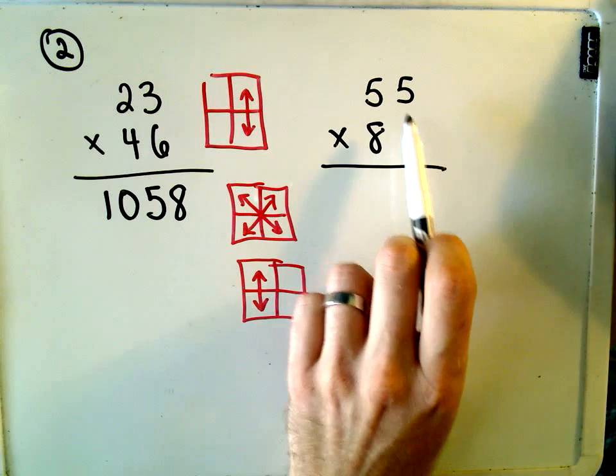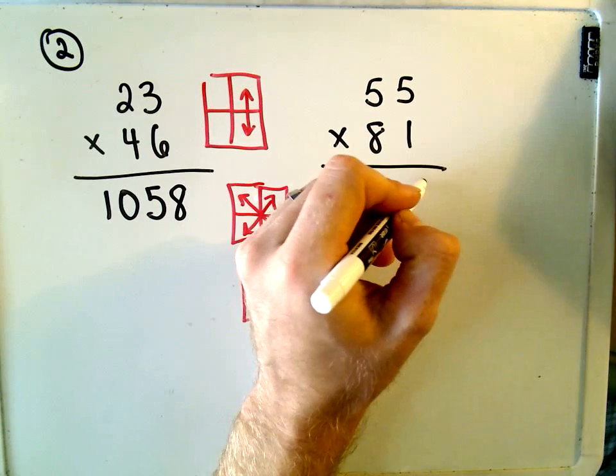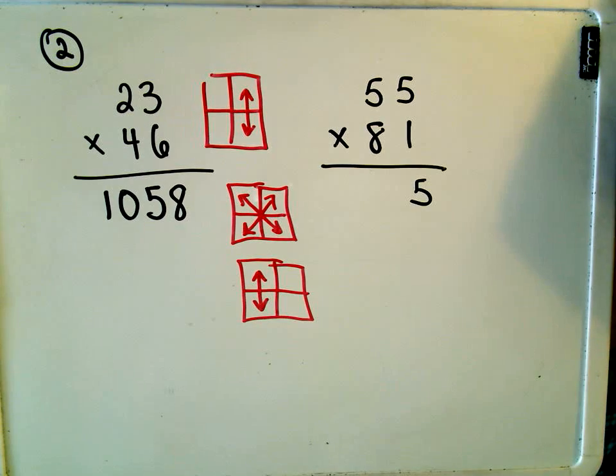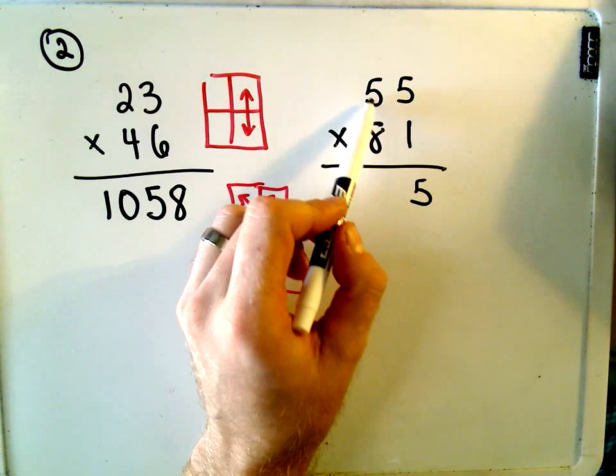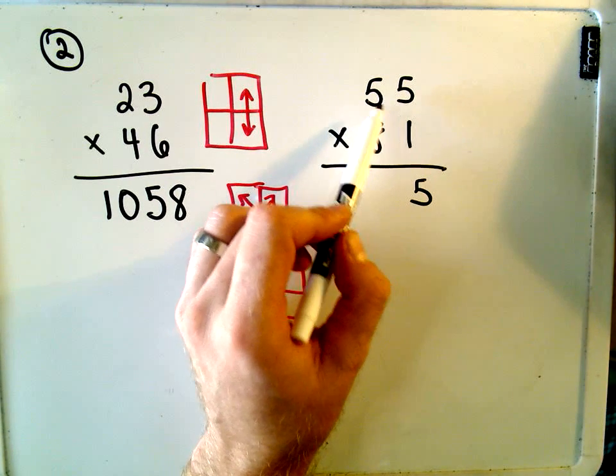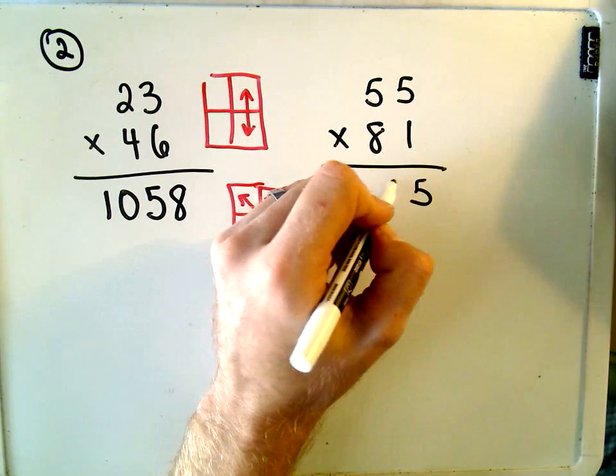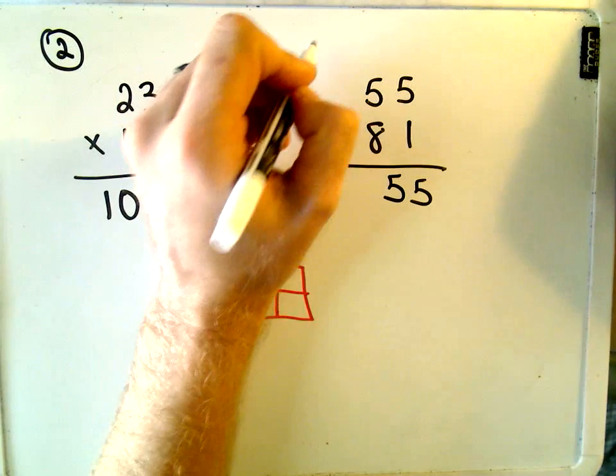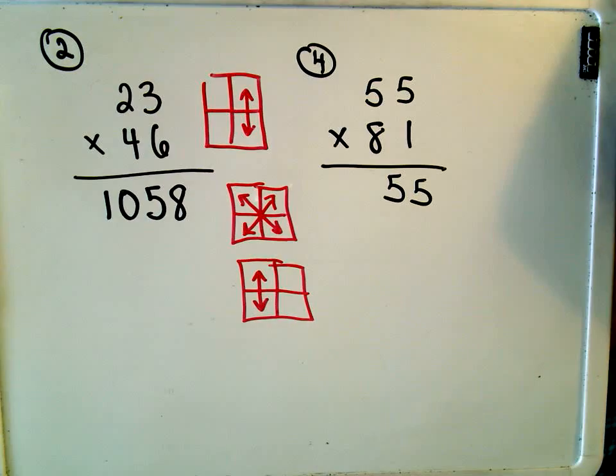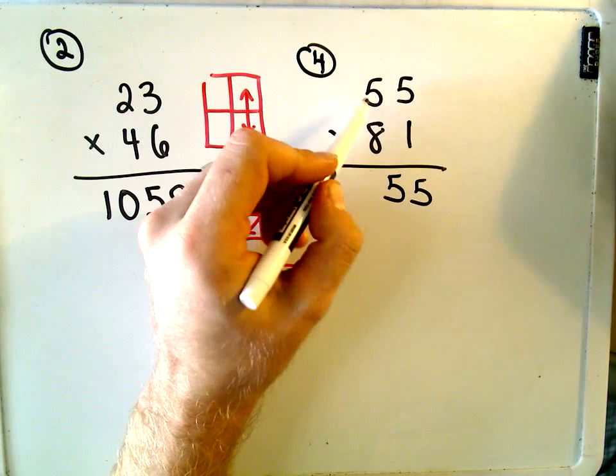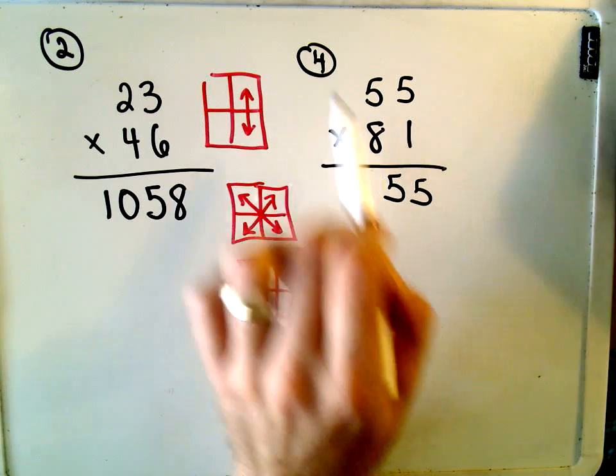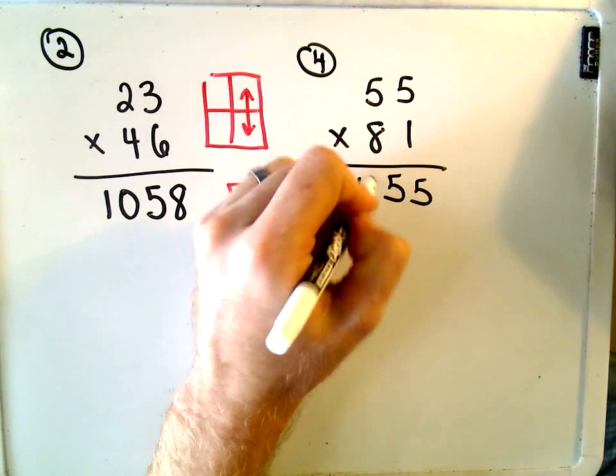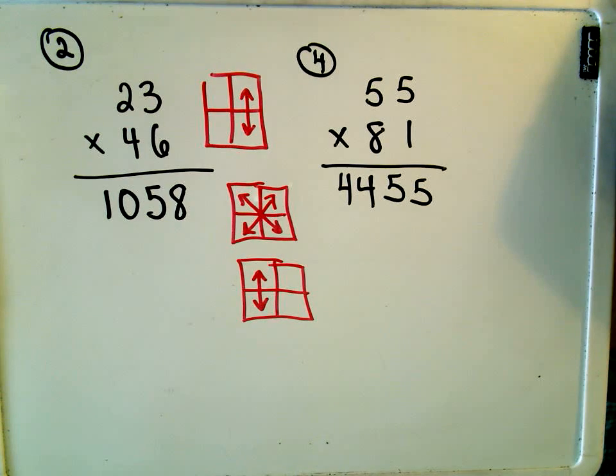So the same trick on this one. 5 times 1 would be 5. We don't have to carry anything in this case. And then we multiply crosswise. So we would get 5 plus 8 times 5, which is 40. So 5 and 40 is 45. So we drop down the 5, carry the 4, and now we just multiply the numbers on the left. 5 and 8 is 40, plus 4 will give us 44, 55 in total.